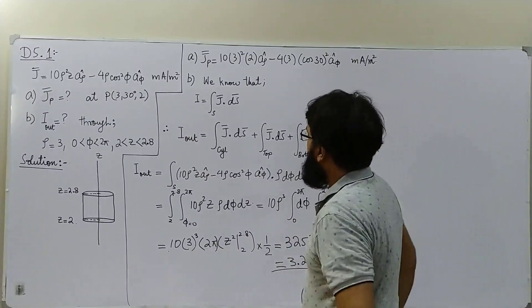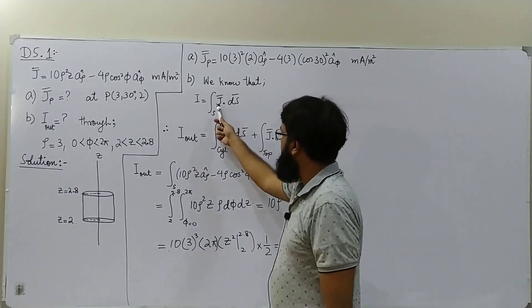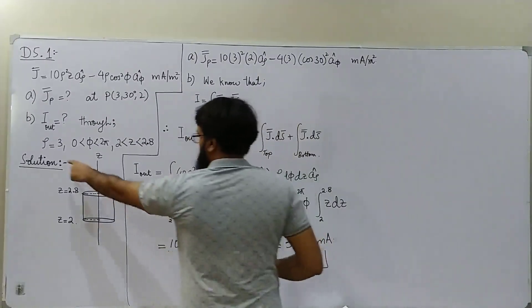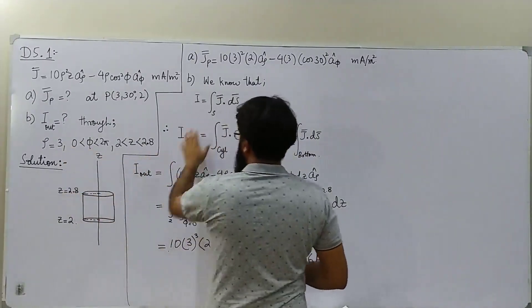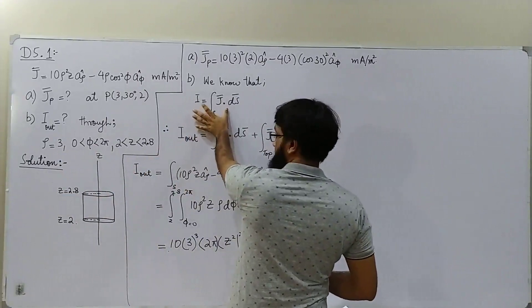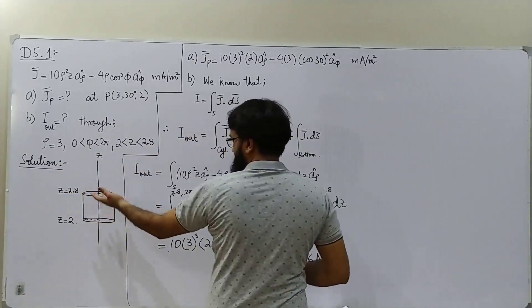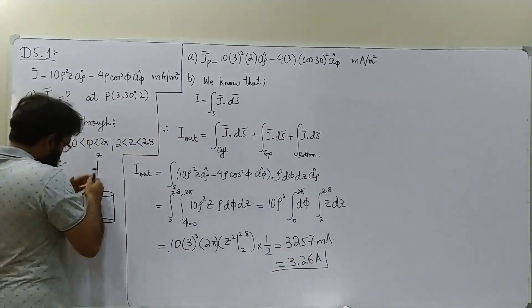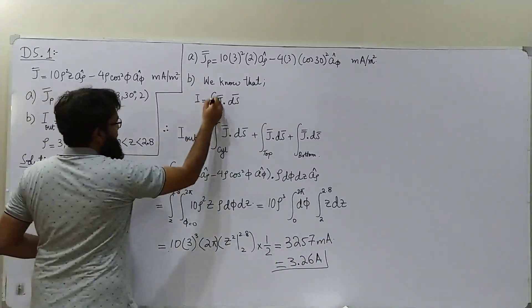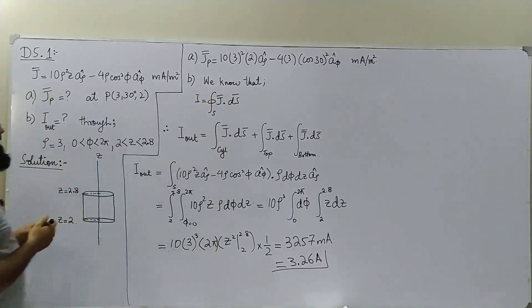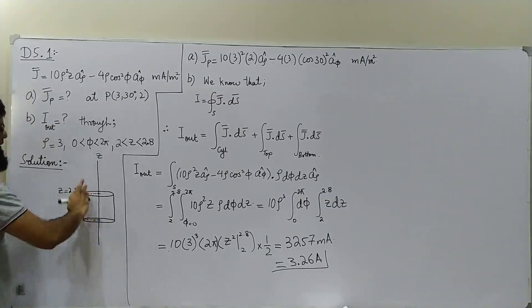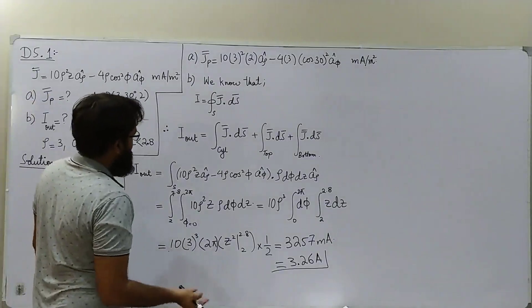Part (b): we know that if we know the current density, we can find out the current. Generally the expression is this equation number one. But since this region through which we are asked to find the current coming out is a closed region, there is no harm if I use this small circle on the integral to just emphasize that this surface is a closed surface.